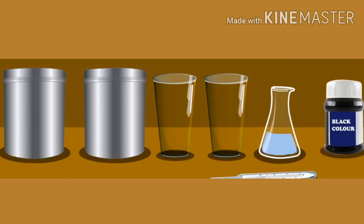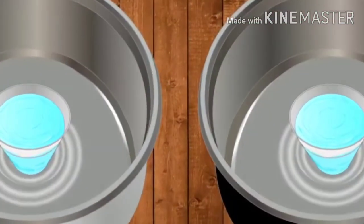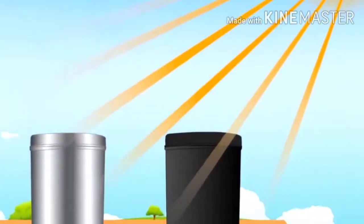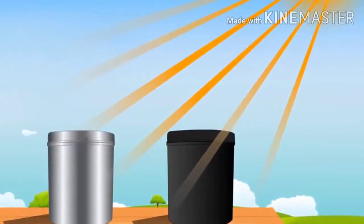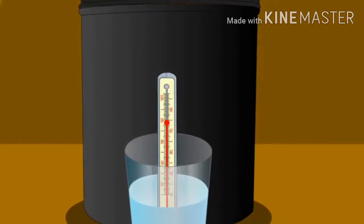Procedure: Paint the outer surface of one tin with black paint and let it dry. Then in both tins place one glass, each filled with water at the same temperature. Cover the tins with lids. Keep them in the sun for two hours. Now measure the temperature of the water in the glasses in the two tins. What is the reason for the difference in the temperature?